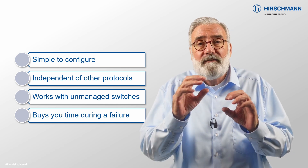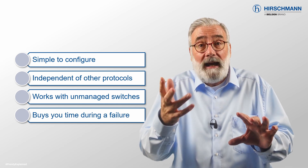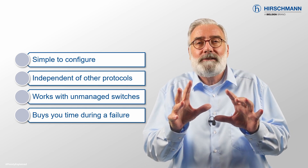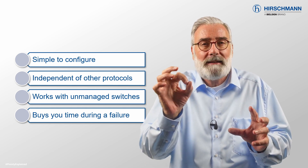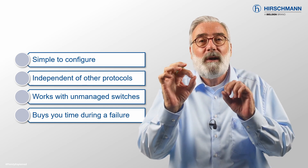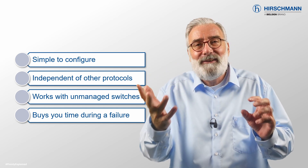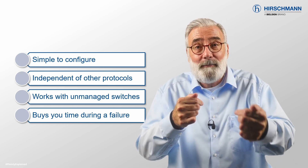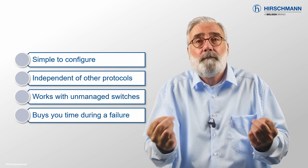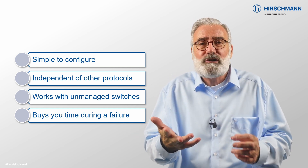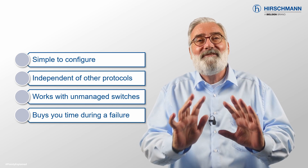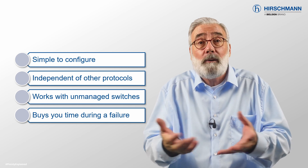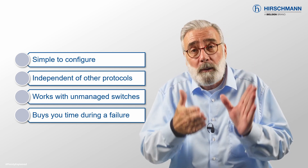If your network does not have protection against loops and a loop occurs, it's unlikely that you will be able to connect to the management agent of the switches to locate the fault. So you will need to waste time walking around your network unplugging cables until you find the loop. With loop detection, you can find the loop from the comfort of your desk, which means your network will be back to normal operation in the shortest possible time.